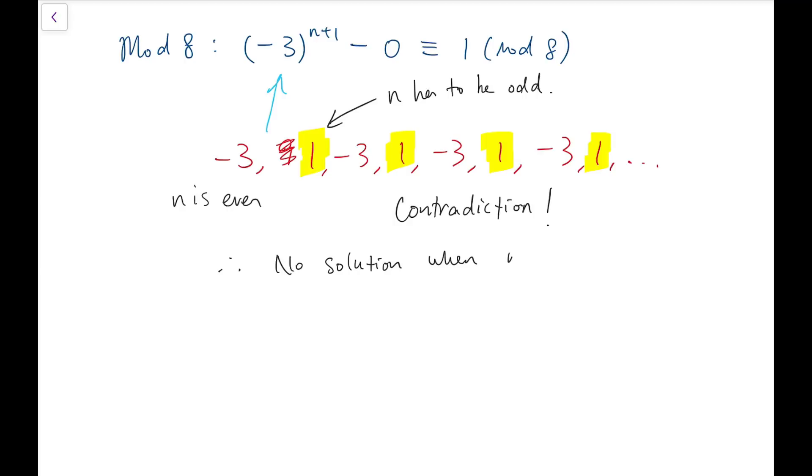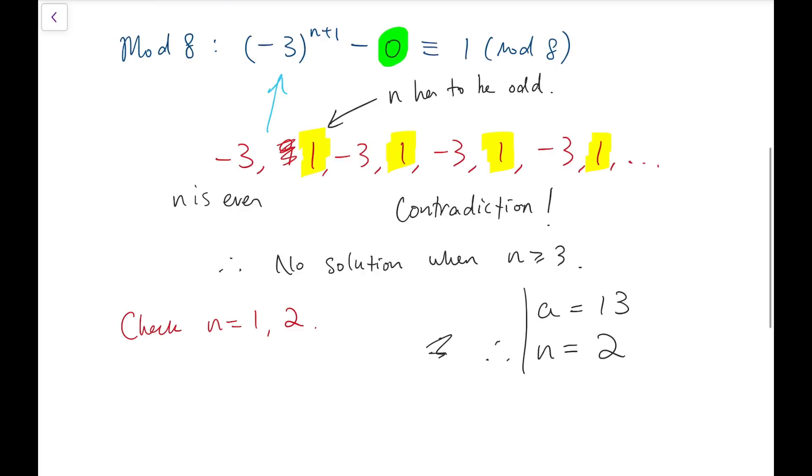Notice that we cannot do this, we cannot try mod 8 when n is equal to 1 or 2, because we will, we then will not have this, we will not have this term to be congruent to 0 mod 8. So now, it remains to check n equals 1 and 2 formally, and actually we have done that before, so that means we can quickly conclude that n is equal to 2, a equals to 13, this is our final answer.